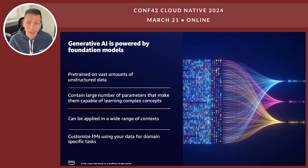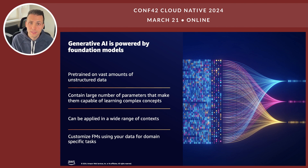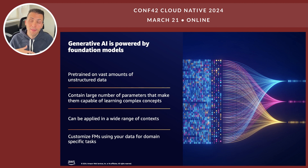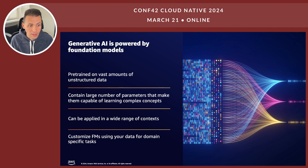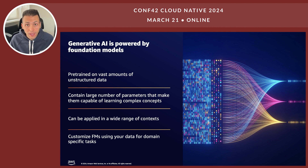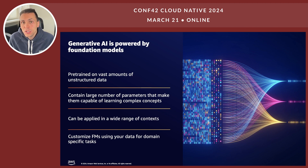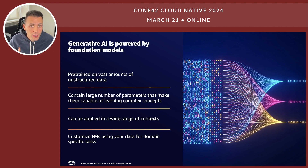There is a technology invented around 2017 by researchers — known as Transformers — which is the neural network architecture that allows generative AI and large language models to actually generate text. The good thing about large language models is they are generic and general on their own, so they're not trained for only a specific use case; they can actually solve a lot of different use cases. The number of possible use cases is pretty much infinite because you can think of these models as able to answer any type of question.